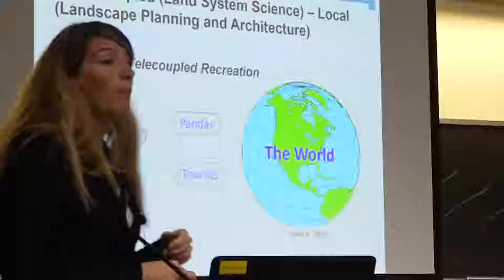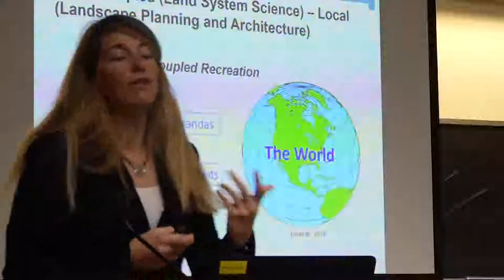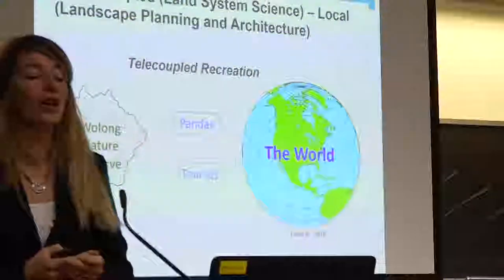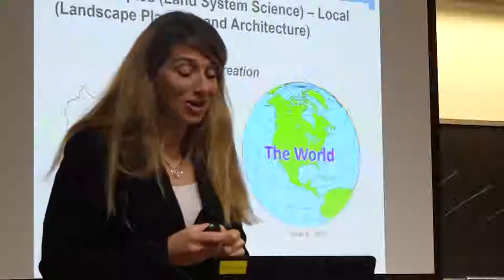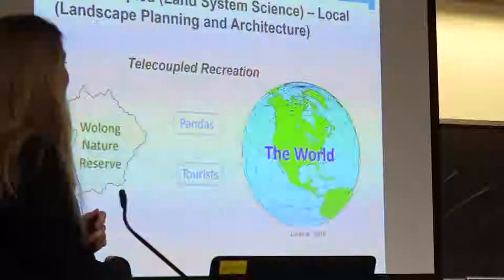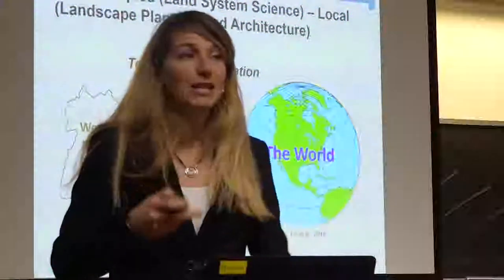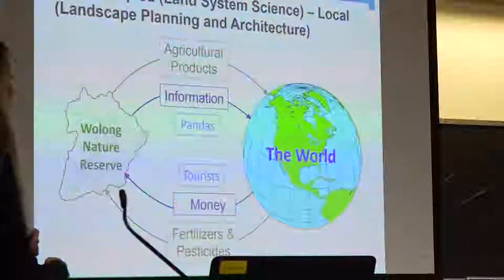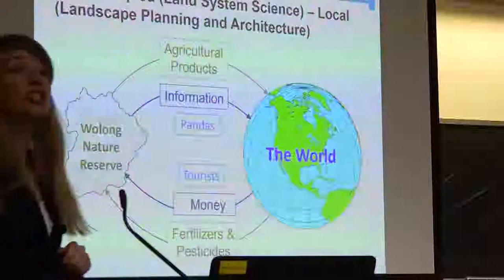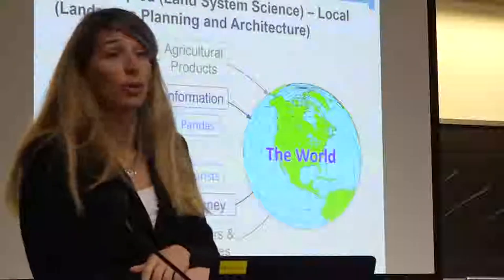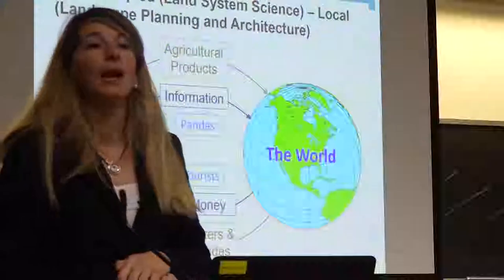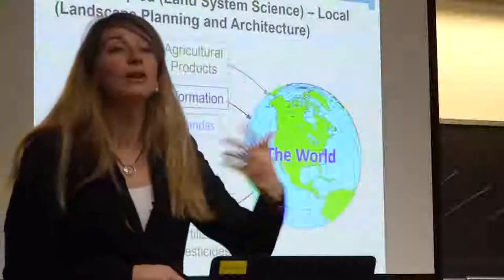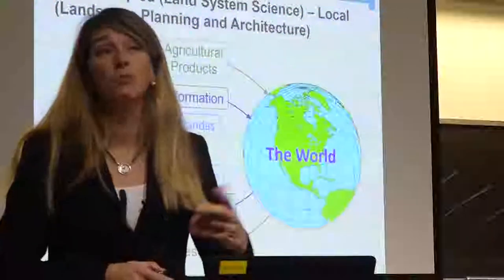This work by Liu, one of the pioneers of this concept, showed very nicely how a very isolated nature conservancy area in southwest China — the Wolong Nature Reserve, which has one of the biggest populations of giant panda bears — is linked all over the world. They export pandas and many tourists come. The pandas bring money, which leads to more information around the world. Agriculture production changes because when they get more money, they produce less agricultural products but can import fertilizer. The final product is that the environment in this nature reserve is not doing well — these loops are changing how this nature reserve is working.